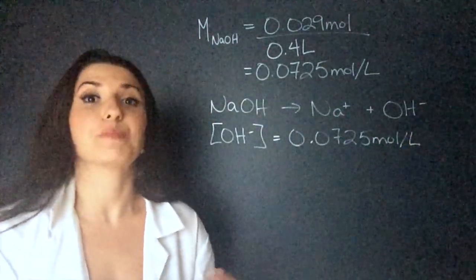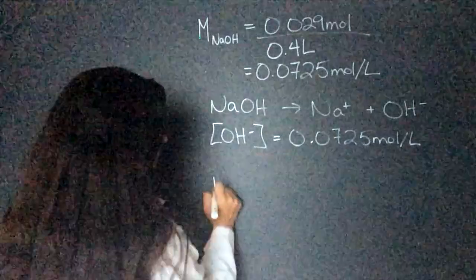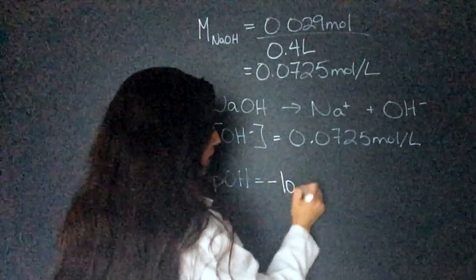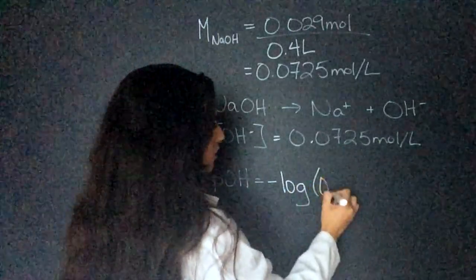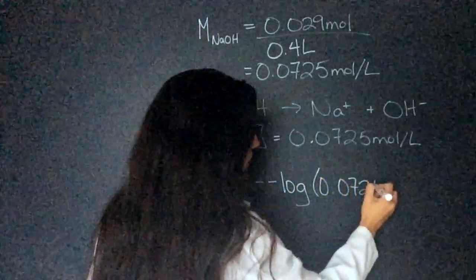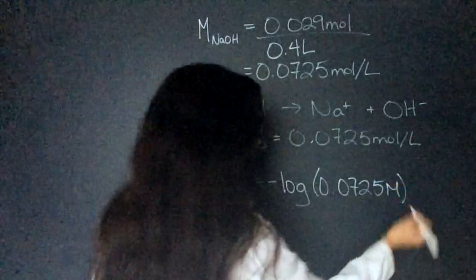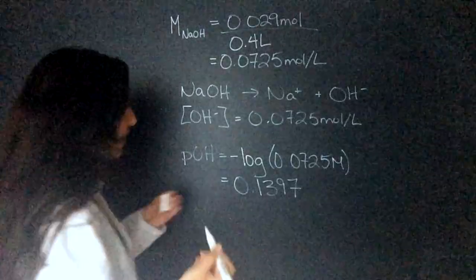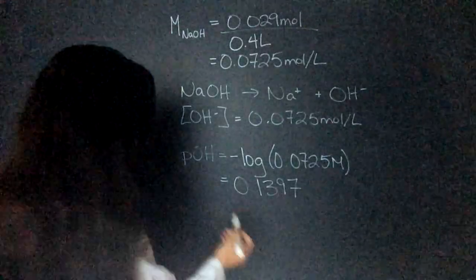Now we can find the POH. POH equals the negative log base 10 of 0.0725 moles per liter. That equals 0.1397. And then we can use this to find the pH.